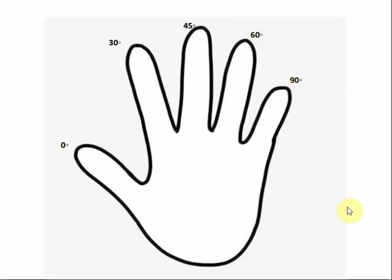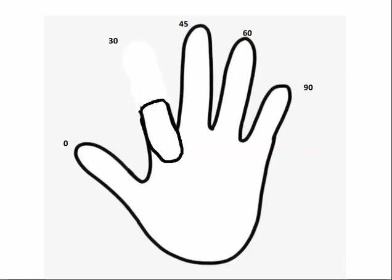Now whichever angle we want to find the values for, we're going to bend down that finger. So let's start with our 30 degree pointer finger. If we bend down our pointer finger like we see here, then the number of fingers to the left is going to represent sine, and the number of fingers to the right is going to represent cosine.